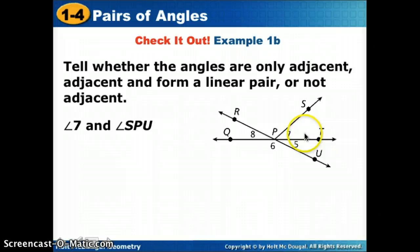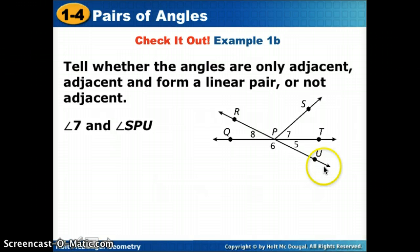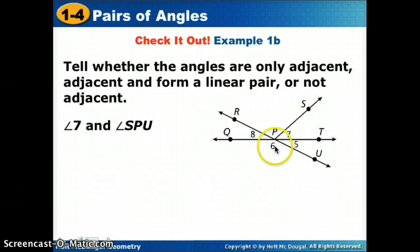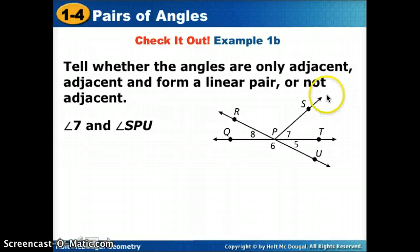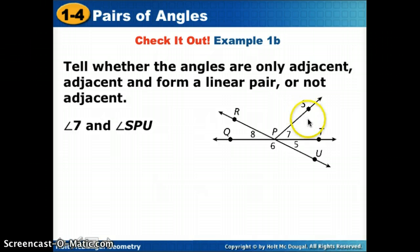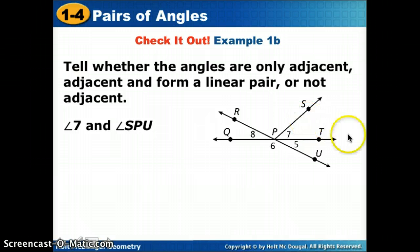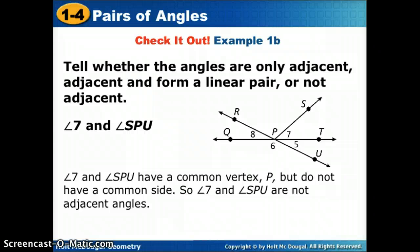Now let's look at angle seven and angle SPU — this small angle and the whole larger angle. First, are they adjacent? They do have a common vertex and a common side. However, all of the interior points inside angle seven are also inside angle SPU, so they share interior points. Therefore, they are not adjacent — you could say they're overlapping.